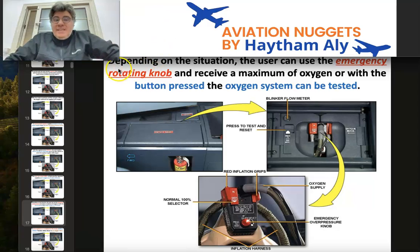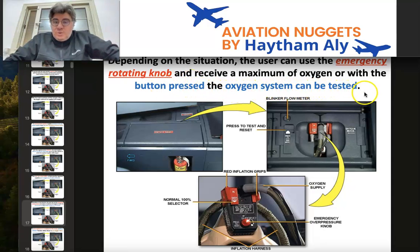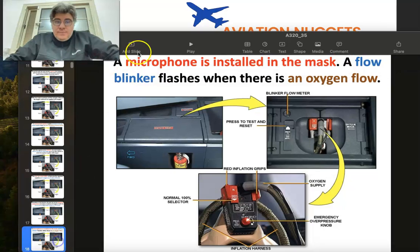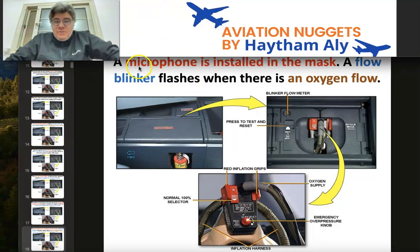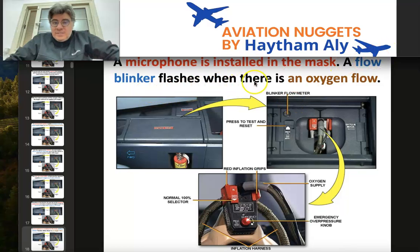Depending on the situation, the user can use the emergency rotating knob to receive a maximum oxygen supply, and the oxygen system can also be tested using the emergency overpressure knob. A microphone is installed in the mask, and a flow blinker flashes when there is an oxygen flow — this is the flow blinker meter.